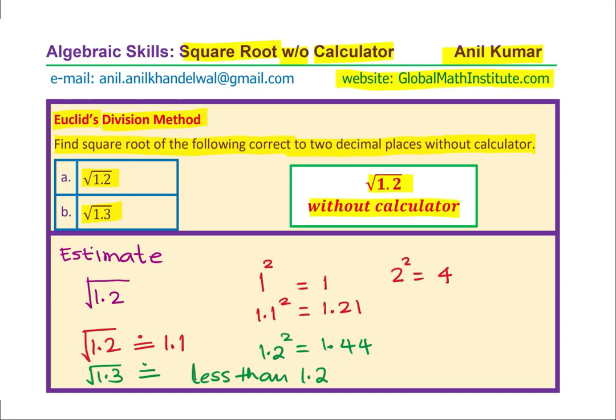Anyway, we have an estimate, right? So, our estimate for √1.2 is 1.1. And for √1.3, we know it is less than 1.2. We can say 1.15, 1.16, 1.17, 1.18, 1.19, something like this. We estimate this as 1.15, since 0.4 is pretty big as compared to 0.3. That could be our approximate answer.